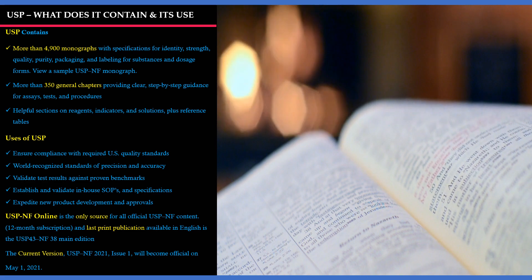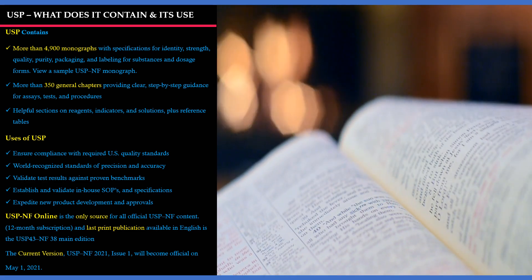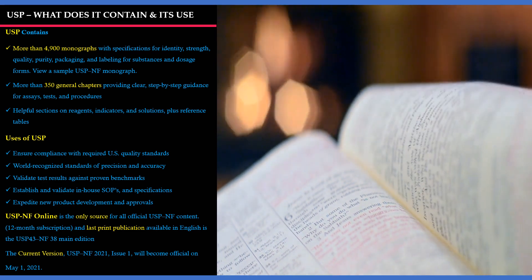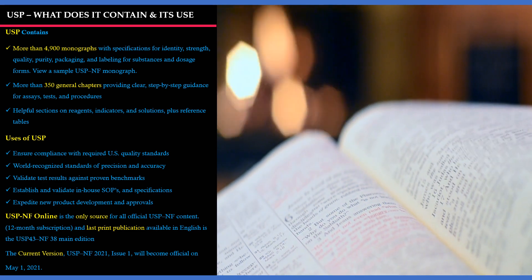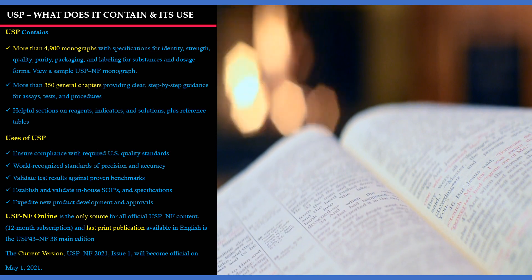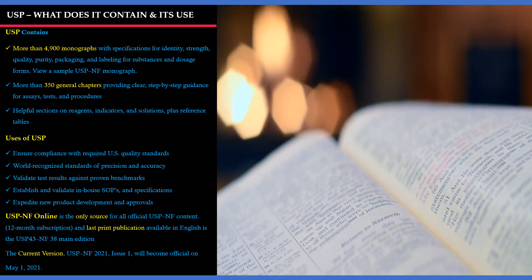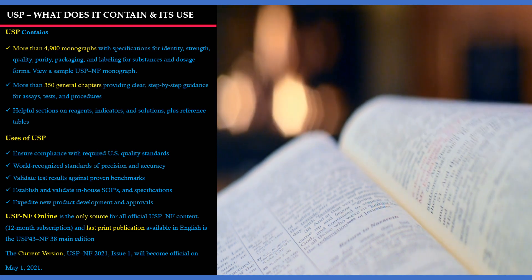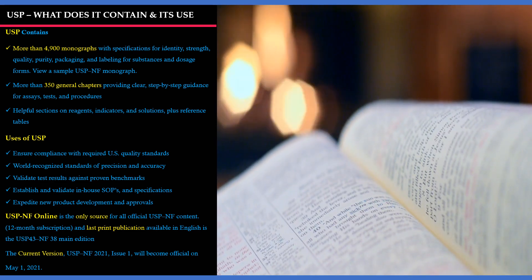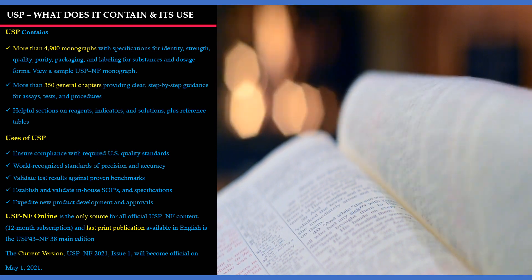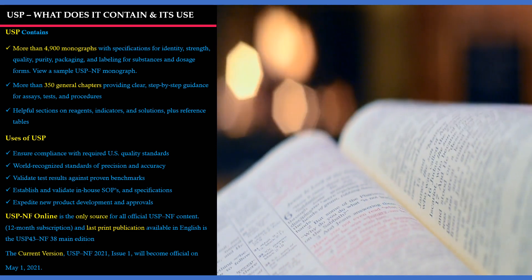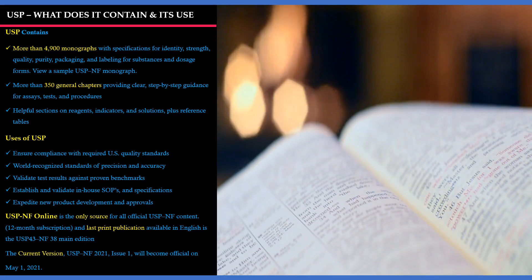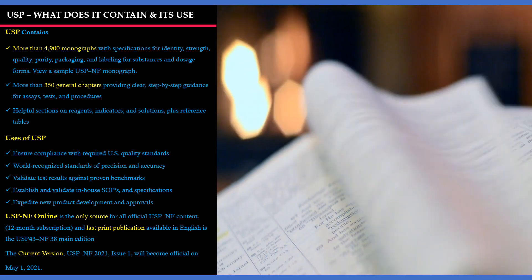USP ensures compliance of US quality standards and it is a world-recognized standard with precision and accuracy. It validates test results against proven benchmarks, establishes and validates in-house SOPs and specifications, and expedites new product development and approvals. USP-NF online is the only source for all official USP-NF content. The last print publication available in English is USP 43 - NF 38 main edition. The current version, USP-NF 2021 Issue 1, will become official from May 1, 2021.